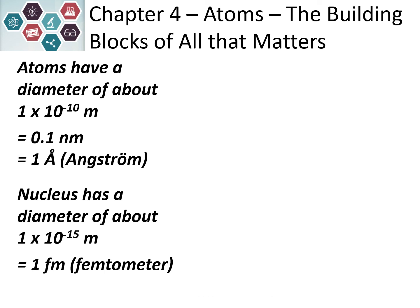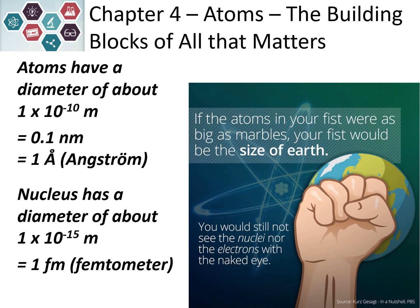To put things in perspective, atoms have a diameter of about 1 × 10⁻¹⁰ meters, which is about 0.1 nanometers — also referred to as an angstrom. The nucleus is significantly smaller, about 1 × 10⁻¹⁵ meters, or a femtometer. To visualize this: if the atoms inside your fist were about the size of a marble, your fist would be as big as the Earth. And even then, you still would not be able to see the nucleus or the electrons with your naked eye.